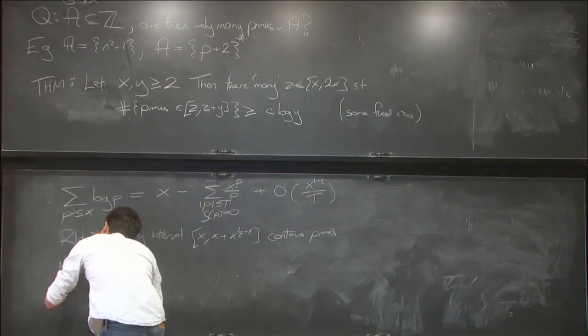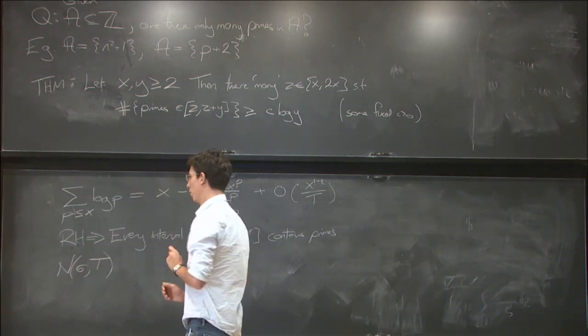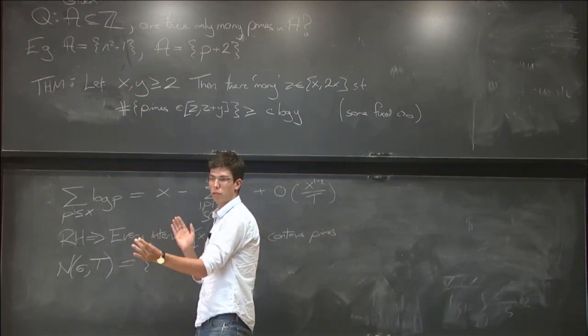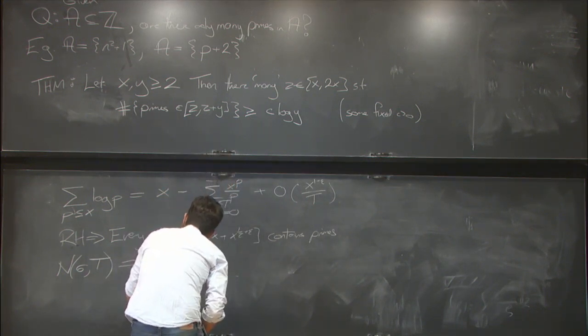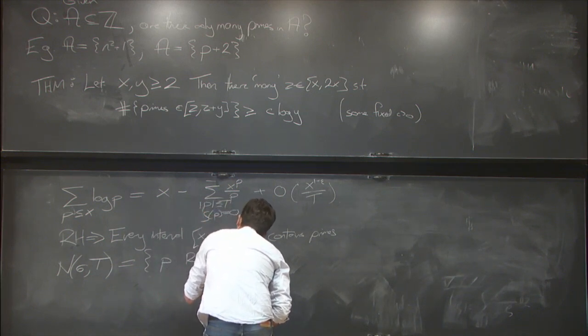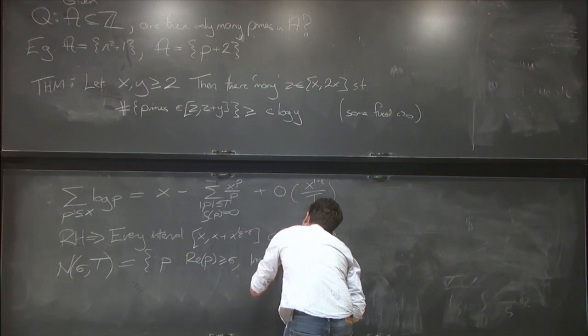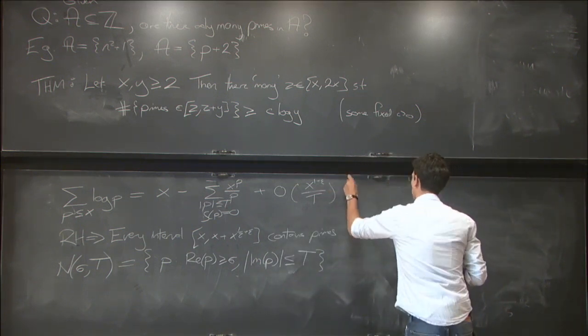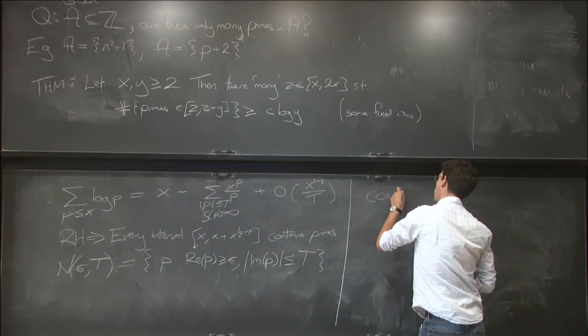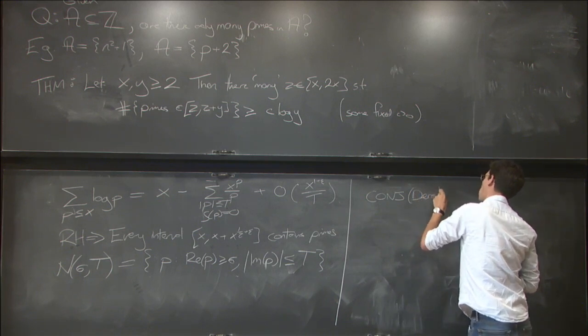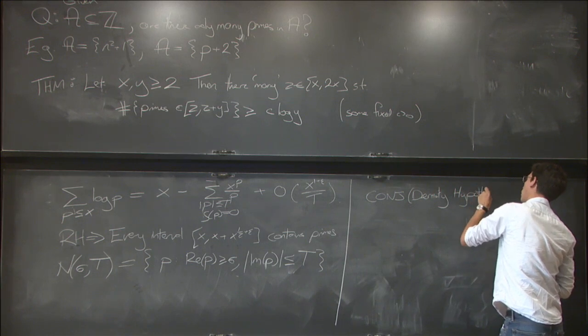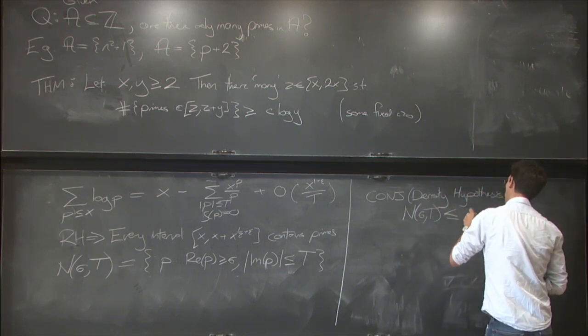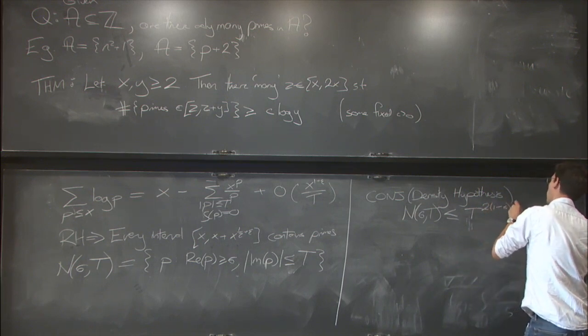So one way to look at this is to have some counting function. So I'll write n of sigma t as just counting all the zeros of the Riemann zeta function in a box, which is going up to height t and is to the right of the line real part equals sigma. So it's rho such that the real part of rho is bigger than or equal to sigma, and the imaginary part of rho is of size at most t. And then the one conjecture is the density hypothesis, which is the claim that n of sigma t is bounded above by t to the power 2 times 1 minus sigma plus epsilon.